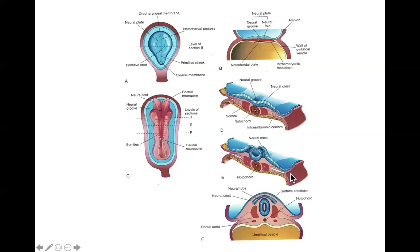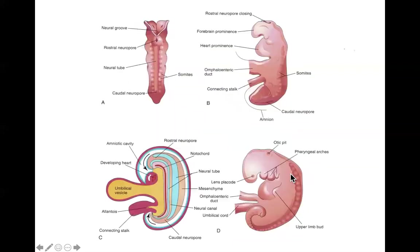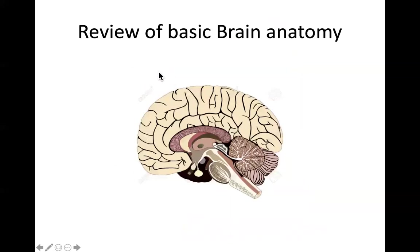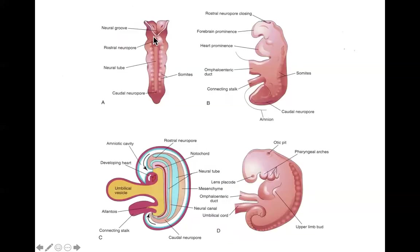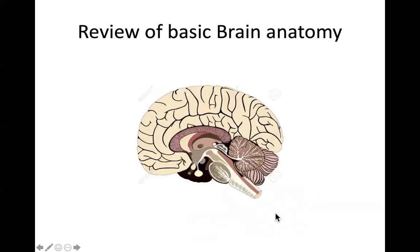This closed-off neural canal is going to become the ventricular system of the brain. In the spinal cord, it's going to become the central spinal canal. This slide just shows how as the tube zips closed from the middle to the outside, you have the rostral neural pore and the caudal neural pore — this one closes first, then the other one — and eventually it's all closed off.